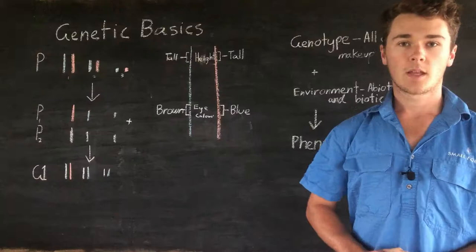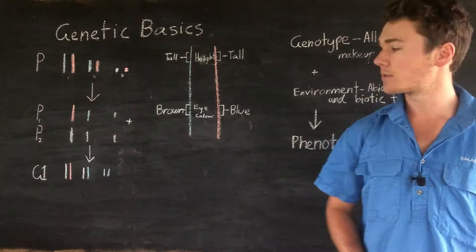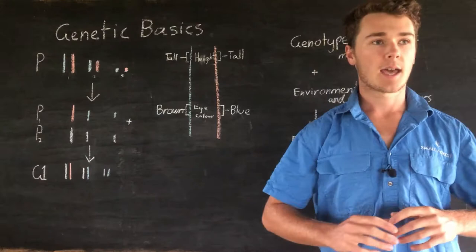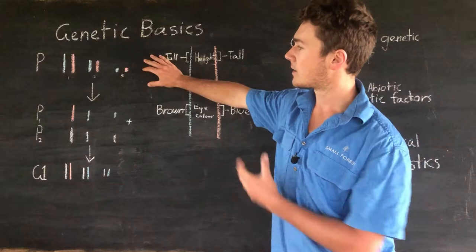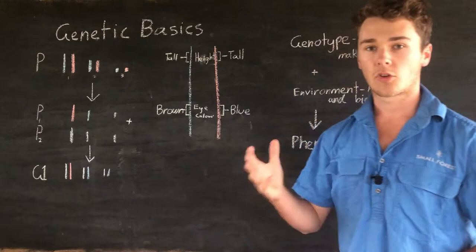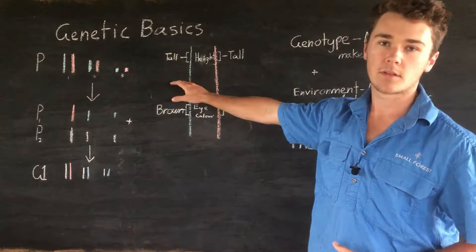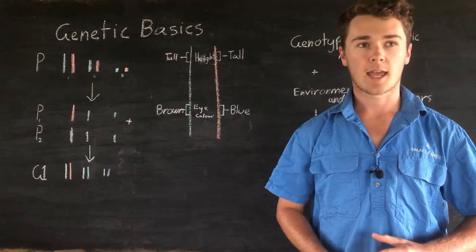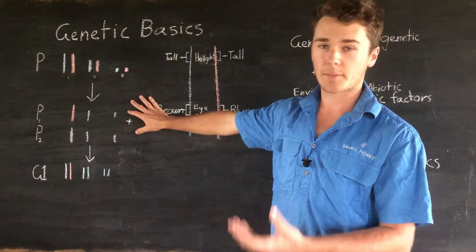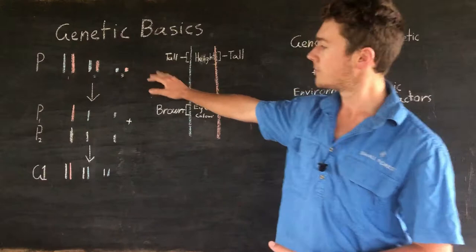Before we get into plant breeding, it's important to brush over some basic genetics. An organism has half of its genetic material from its father and half from its mother. As you can see here, the mother's chromosomes are represented in pink and the father's in blue. When an organism wants to make offspring, it produces either an egg or sperm — called gametes. What goes into that gamete is half of its genetic material, and which chromosome goes in is completely random and independent of the other chromosomes.